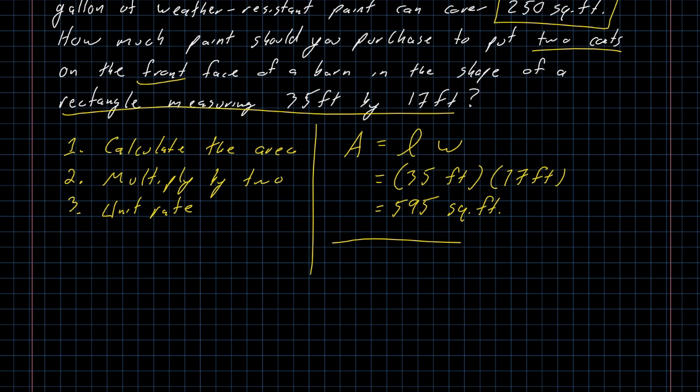Multiply that by 2. Because we want to put two coats on, we'll just take 2 times 595, which my calculator is happy to tell me is 1,190 square feet that we want to paint.